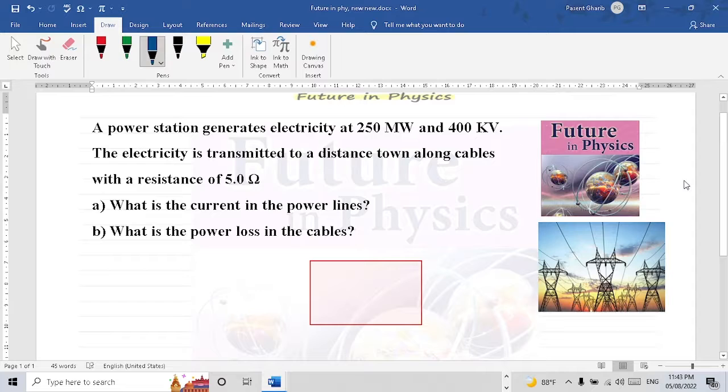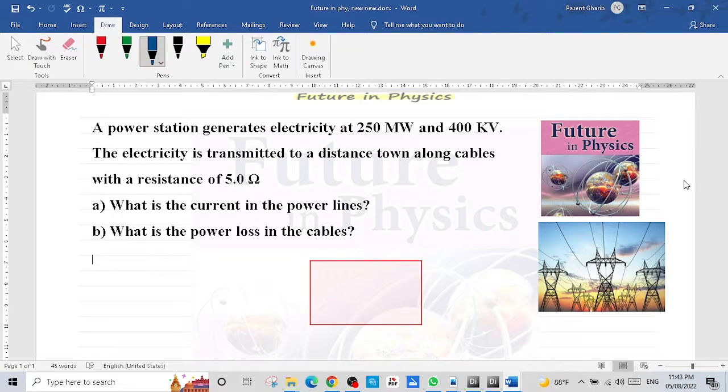A power station generates electricity at 250 megawatt and 400 kilovolt. The electricity is transmitted to a distance town along cables with a resistance of 5 ohm.